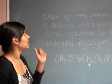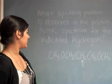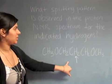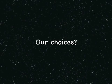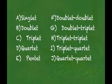Our problem is what splitting pattern is observed in the proton NMR spectrum for the indicated hydrogens for this molecule. I have absolutely no idea what I'm doing. Can you please explain?